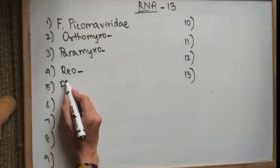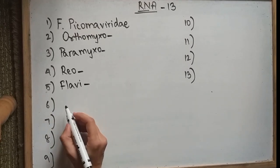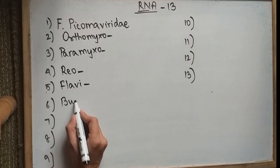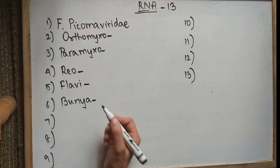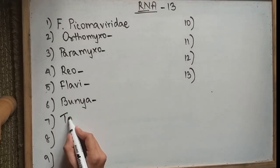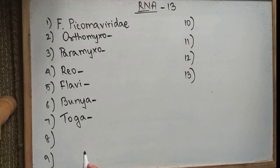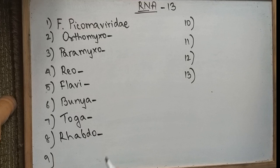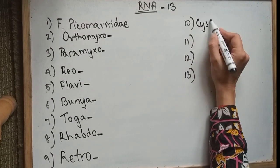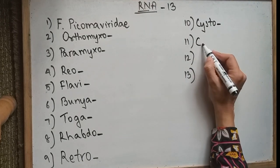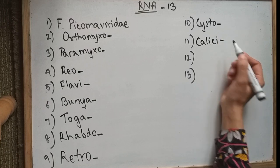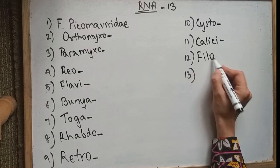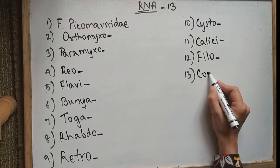Then Reoviridae, Flaviviridae, Bunyaviridae, Togaviridae, Rhabdoviridae, Retroviridae. Then we've got the C's: we've got Cistoviridae, Caliciviridae, Filoviridae, and the last one would be Coronavirus.